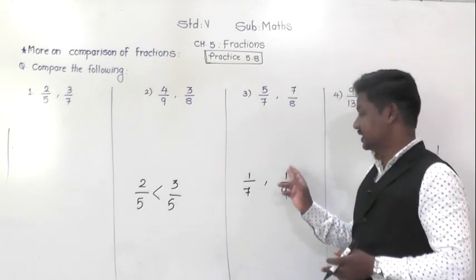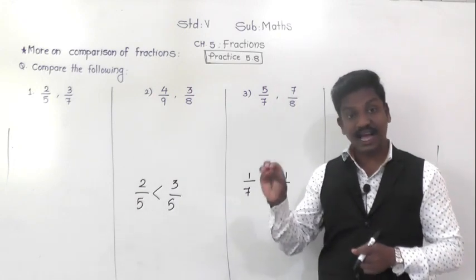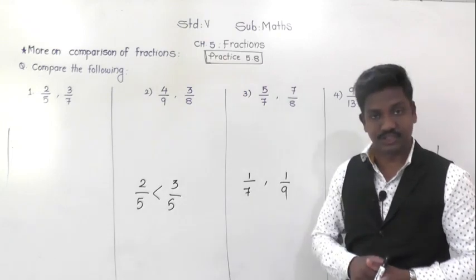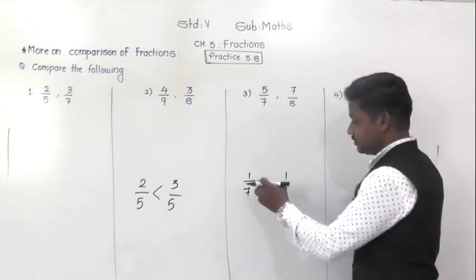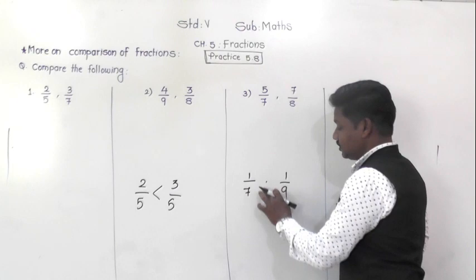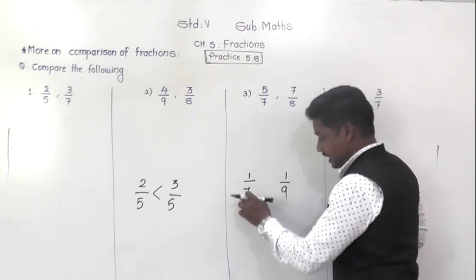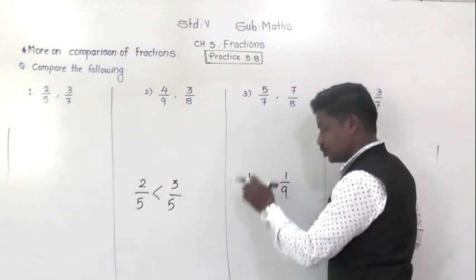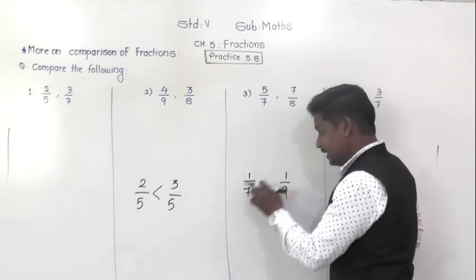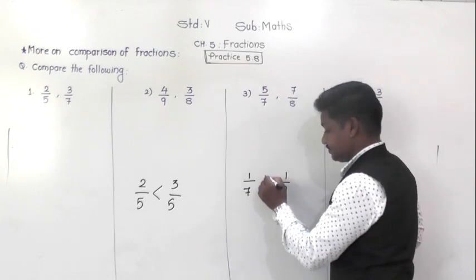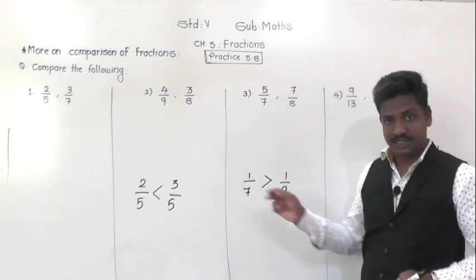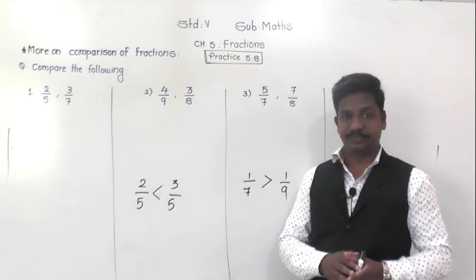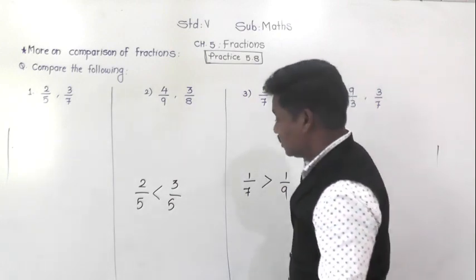When numerators are same, the fraction having the smaller denominator is the greatest fraction. For example, 1/7 and 1/9: since 1/7 has the smaller denominator, 1/7 is greater than 1/9. These are the two rules of comparison we learned before vacation.